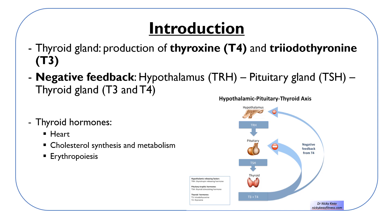TSH promotes iodide trapping by the thyroid as well as the synthesis and release of thyroid hormones. For example, the presence of excess circulating free T3 and T4 produces negative feedback to the hypothalamus and anterior pituitary, decreasing TRH and TSH synthesis and release and subsequently thyroid hormone production.